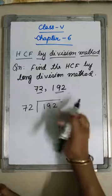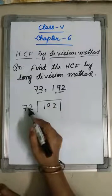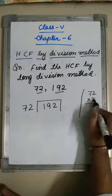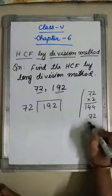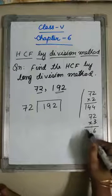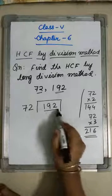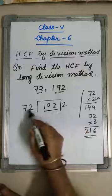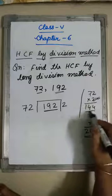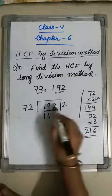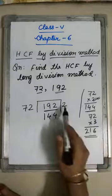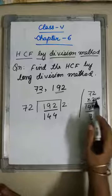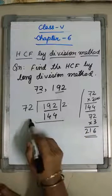How many times can I divide 192 by 72? Check here: 72 into 2 is 144, and 72 into 3 is 216, which is greater than 192. So I shall write 2 as the quotient, and write 144 below 192.